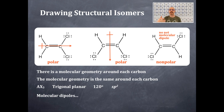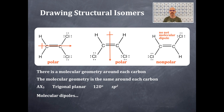Trans-like structures are the most stable because the large chlorine atoms are as far apart as possible, which inhibits steric hindrance issues. The other two structures are polar, while the trans structure is nonpolar.